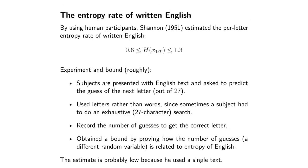Shannon constructed an experiment where he would start with a letter and ask people to guess the next letter in a sentence. Based on how many guesses it took the average human to get the next letter, he used math to estimate the entropy of written English. His estimate is somewhere between 0.6 and 1.3 bits for the per-letter entropy rate of written English — probably a slight underestimate since he only used one single text.